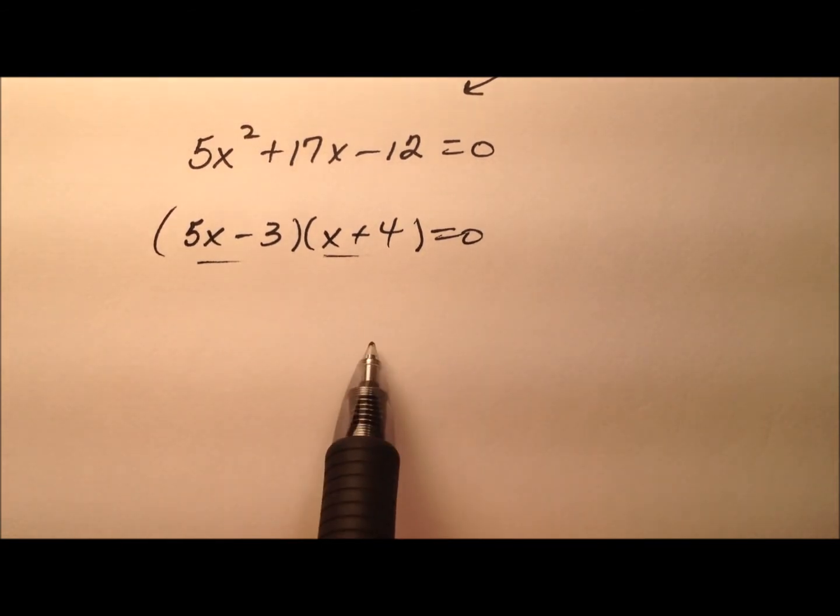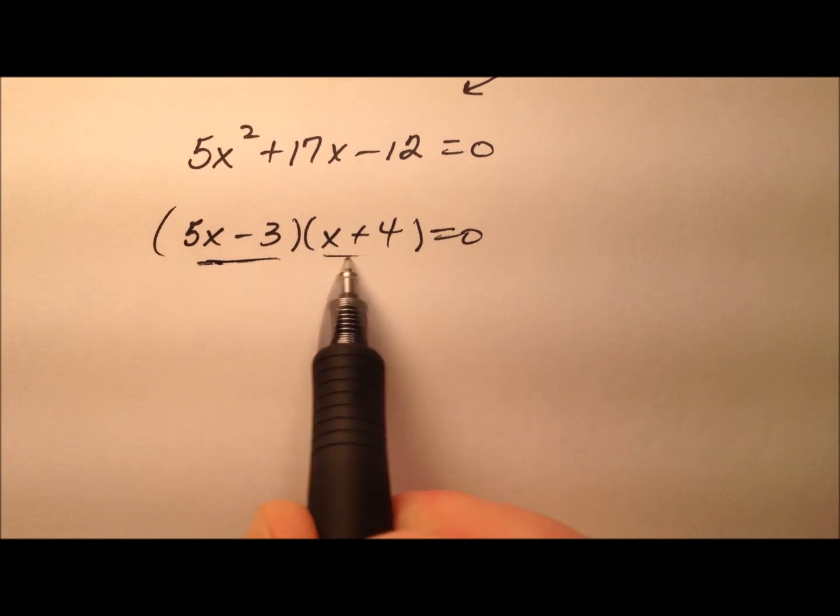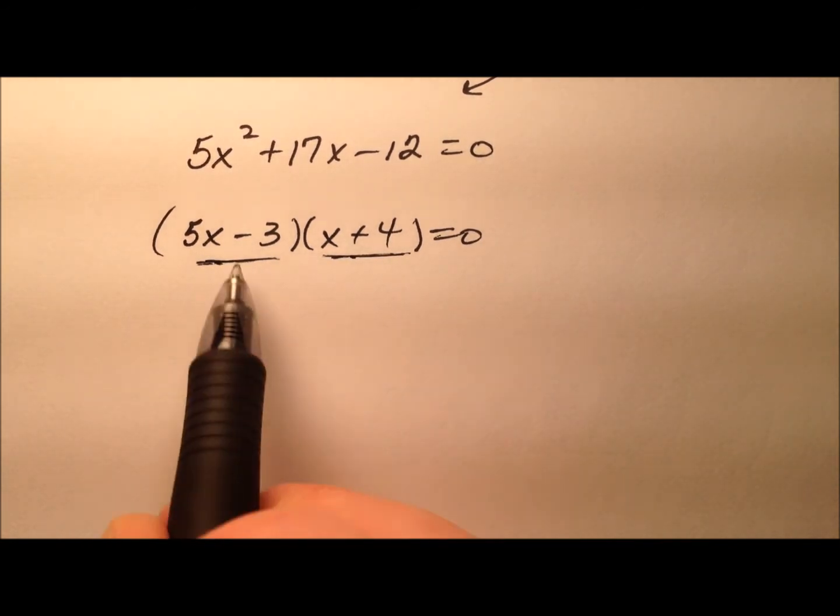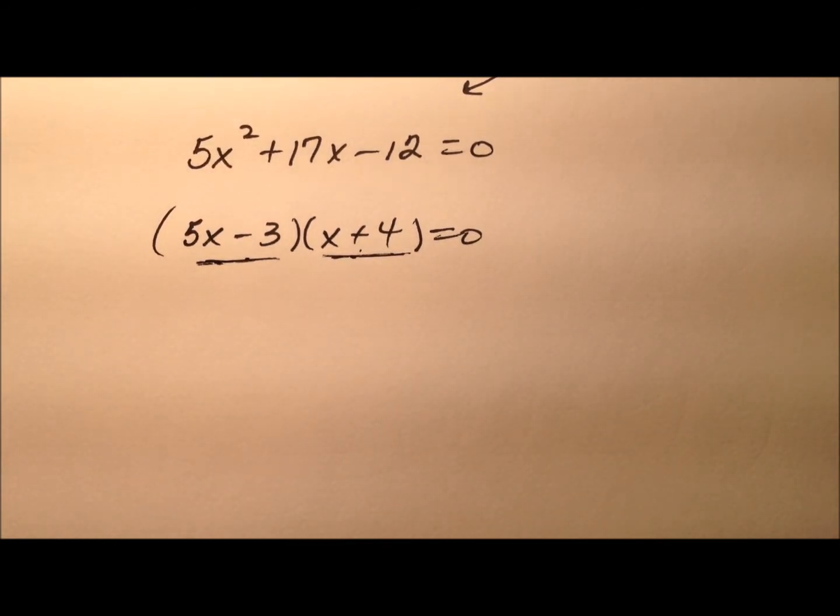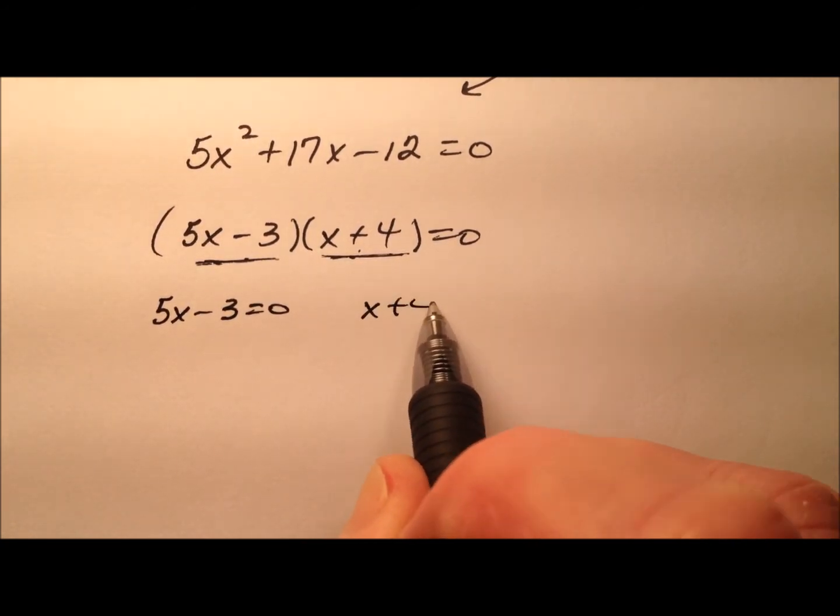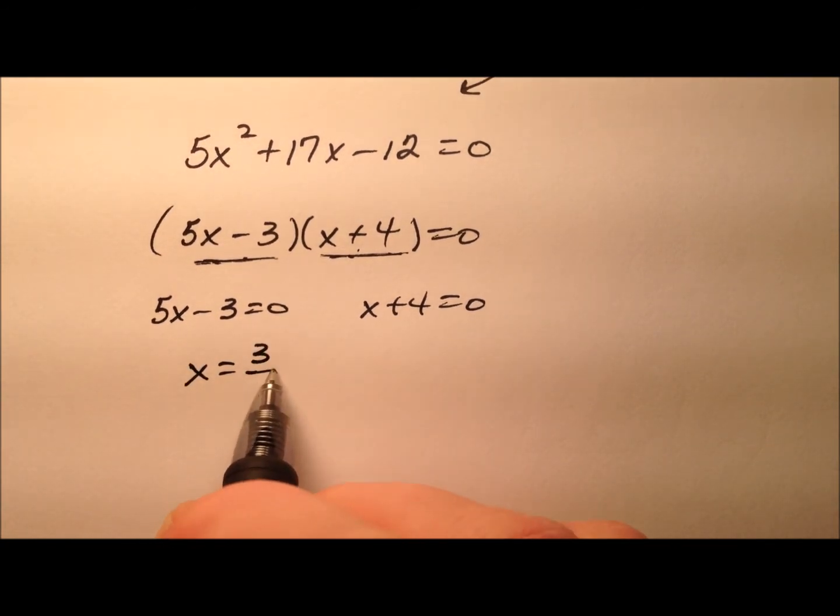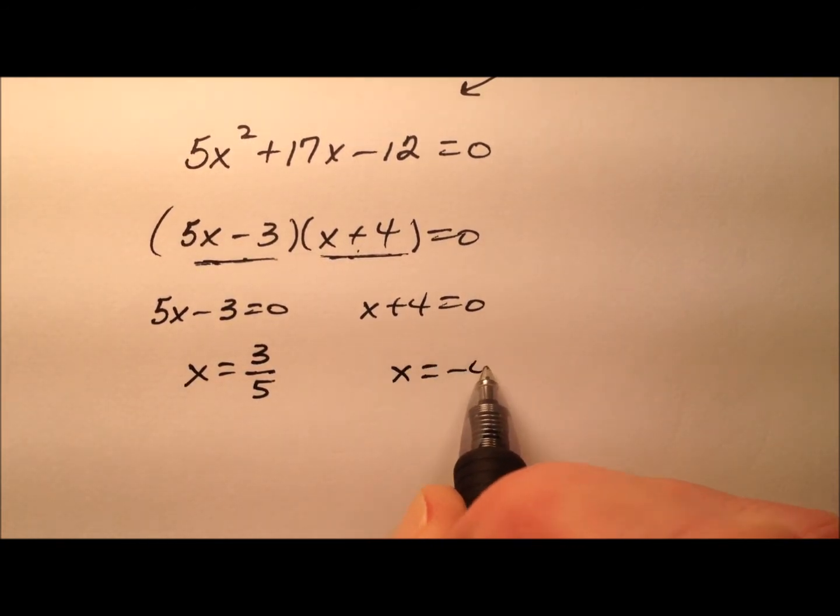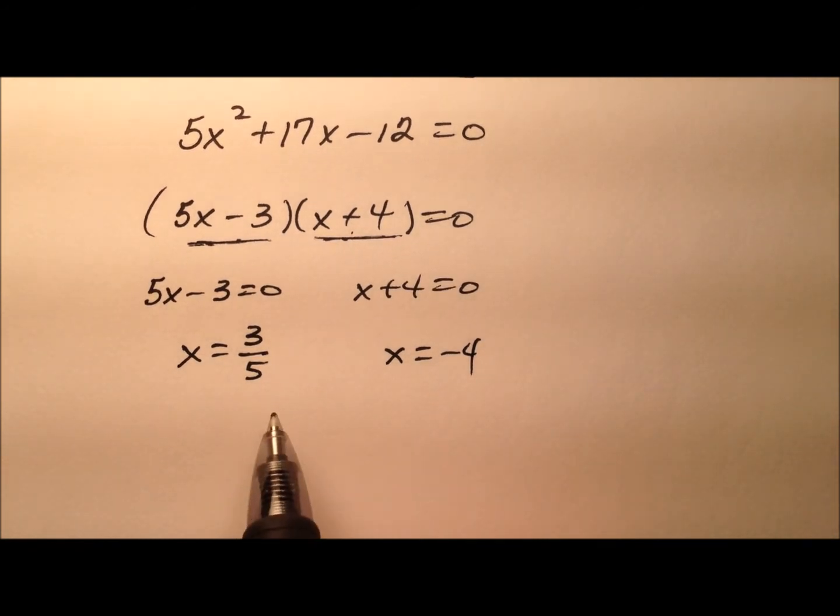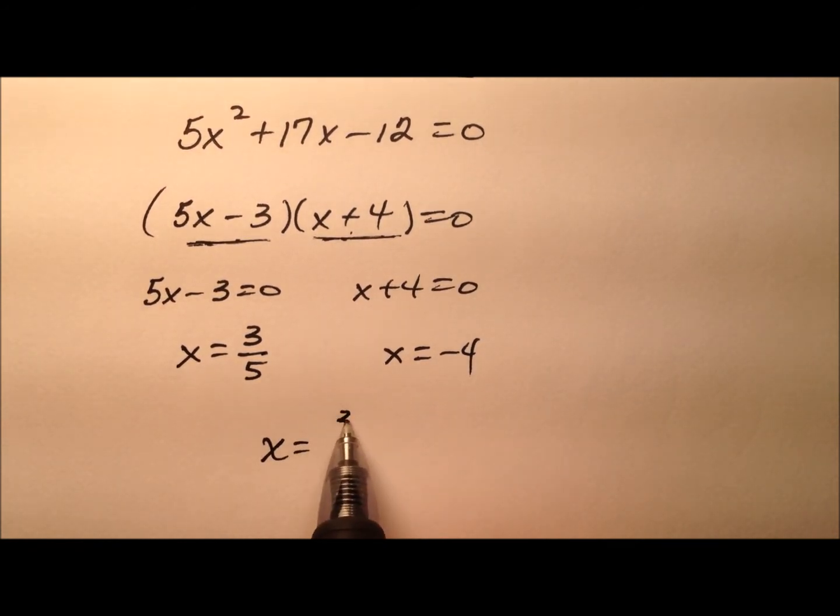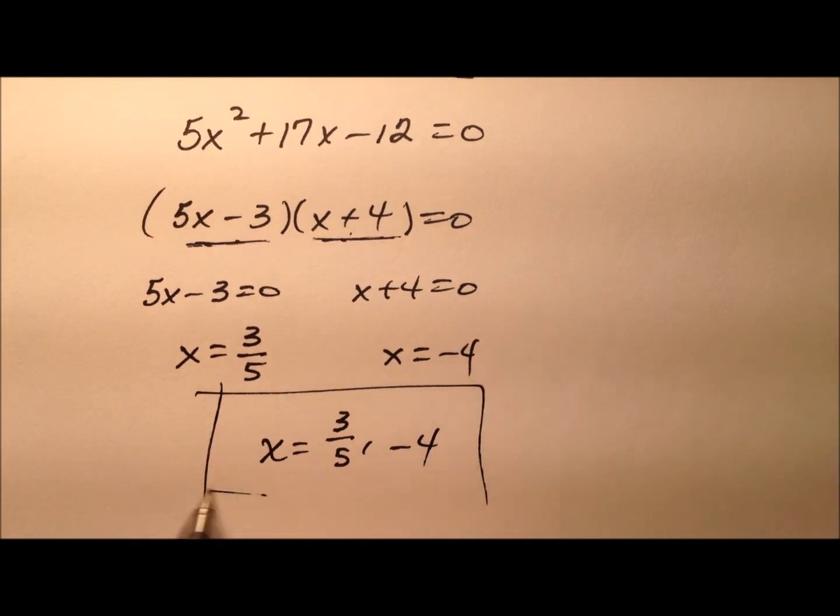So using the zero property of multiplication, if these two factors multiply to make 0, well then either one of them could be 0, so let's go ahead and account for both situations. We'll set each one of these factors equal to 0 and solve. So x equals 3 fifths, x equals negative 4, so we can just go ahead and put them together and say x equals 3 fifths or negative 4.